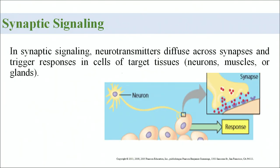In synaptic signaling, neurotransmitters diffuse across the synapse and trigger a response in cells of the target tissue. The target tissue may be a neuron, muscle, or gland. Neurotransmitters are the key molecules involved in this kind of signaling.